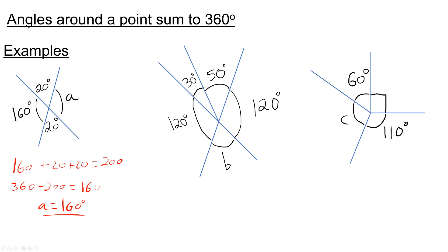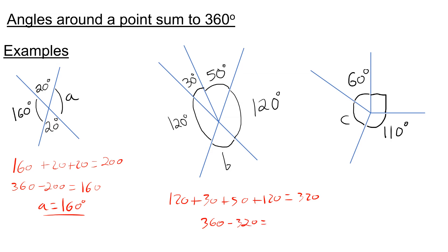In the second question, we add up all the angles we know: 120 plus 30 plus 50 plus 120, which gives us 320. To get B, we do 360 take away 320, which is 40 degrees.